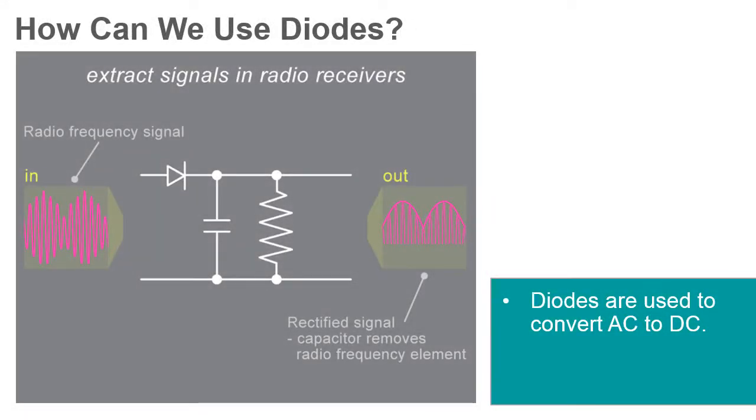Diodes play a crucial role in the conversion of alternating current to direct current, allowing our electronic devices to receive power from the plugs in our walls. This function of blocking current in one direction is used not only in converting from AC to DC, but is also used to extract modulation from radio signals in radio receivers.